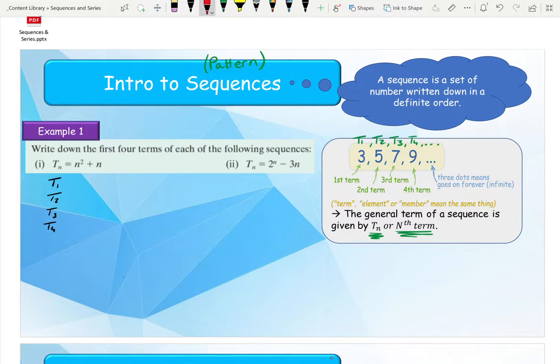And you can see here that our small number n is always our little term that we're subbing in. So to find term 1 we just sub in 1 everywhere we see an n and that gives me 2. We sub in 2 for term 2 everywhere we see an n and that gives me 6. We sub in 3 everywhere we see an n and that gives me 12.